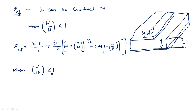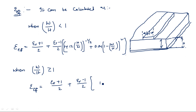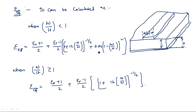When width-to-height ratio W/h is greater than or equal to one, epsilon_e equals (epsilon_r + 1)/2 + (epsilon_r − 1)/2 multiplied by [1 + 12(h/w)]^(−1/2). The reason is that when W/h is less than one the factor 0.04(1 − w/h)^2 remains, but when W/h is greater than or equal to one that factor is cancelled.